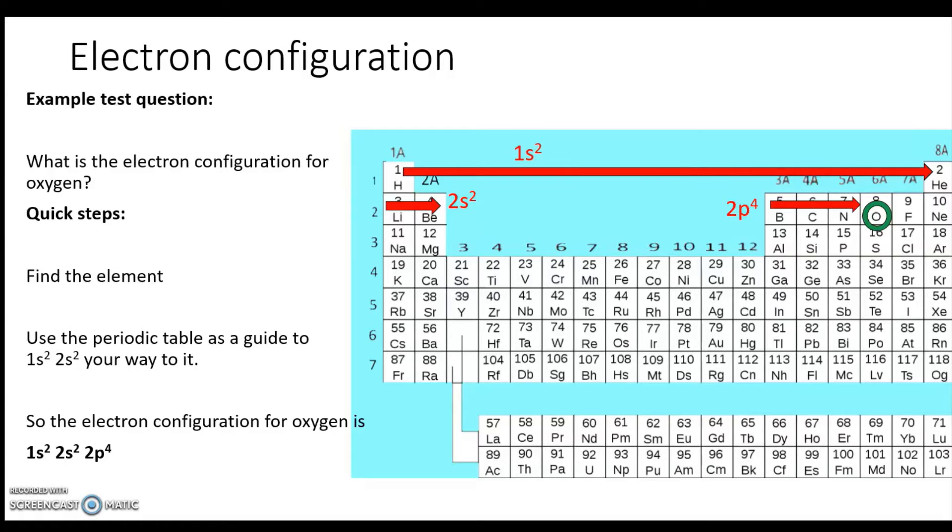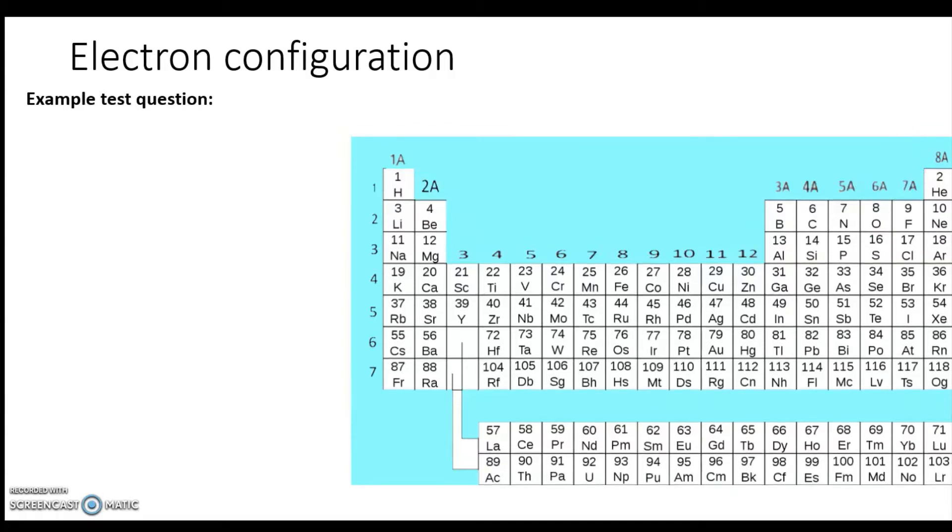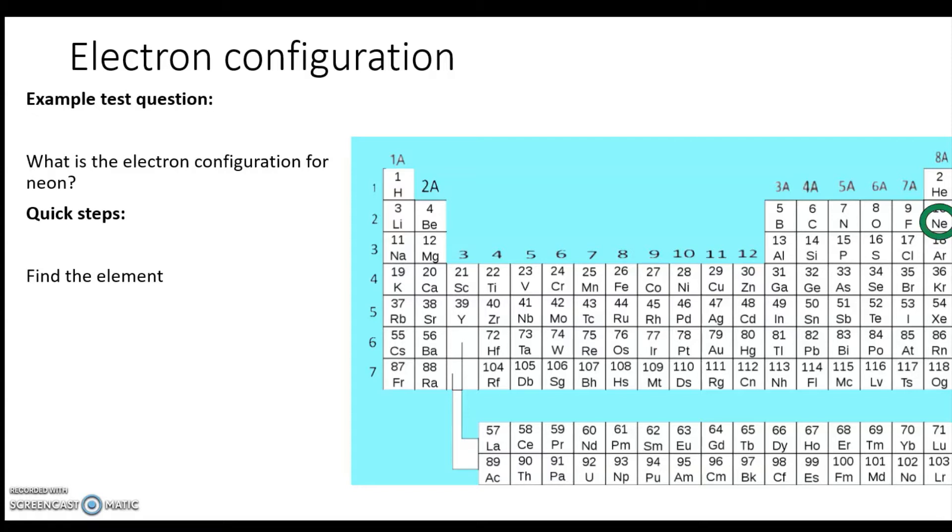All right, the next one is: what is the electron configuration for neon? So again, the same steps. You find the element right there, and then 1s² 2s² our way to it: 1s² 2s² 2p⁶. And that's it, that's pretty quick.